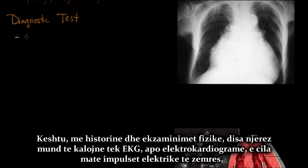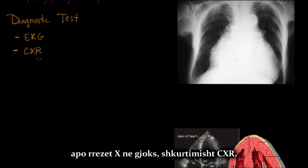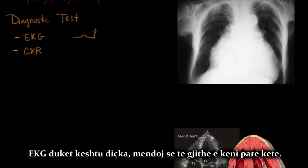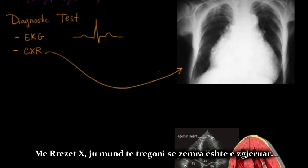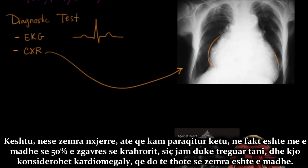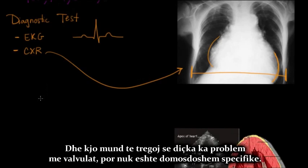Some clinicians may jump to an EKG or electrocardiogram, which measures the electrical impulses in the heart, or a chest x-ray, abbreviated CXR. From the EKG, you can tell if someone has an arrhythmia, if the chambers of the heart are bigger or more muscular, and you can also diagnose things like a heart attack. With a chest x-ray, you can tell if the heart is dilated or larger. If the heart silhouette is larger than 50% of the thoracic cavity, that is considered cardiomegaly, meaning the heart is enlarged — which could indicate something wrong with the valves, but is not necessarily specific.